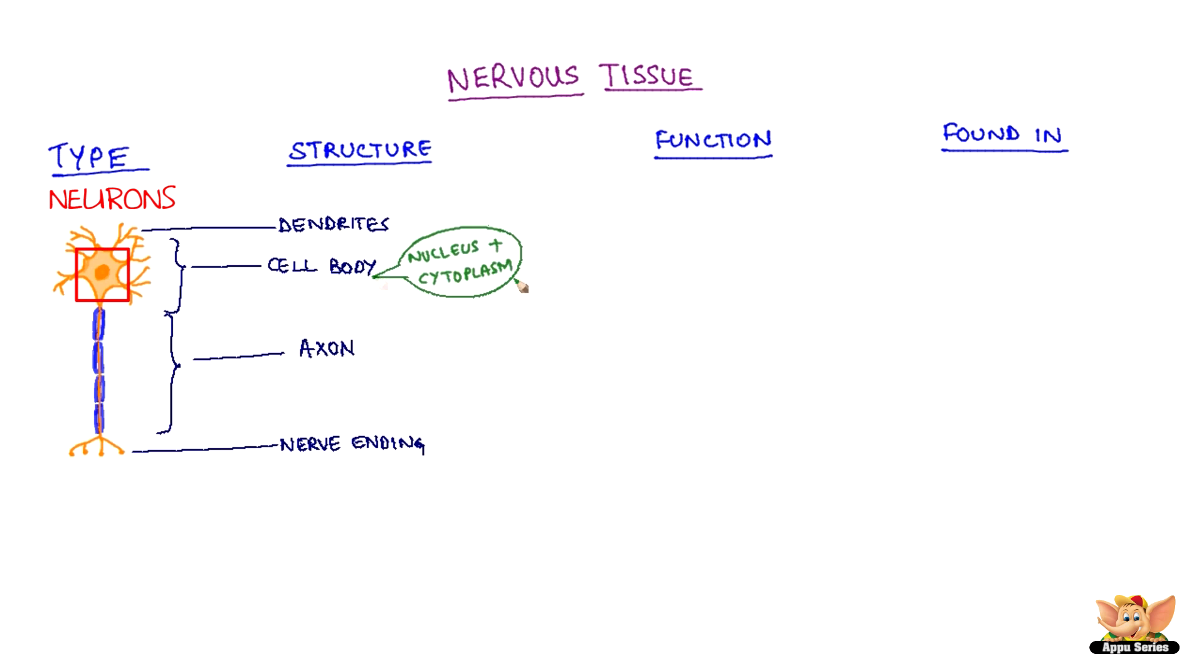The cell body has nucleus and cytoplasm. It has hair-like structures called the dendrites. The axon ends with nerve endings.